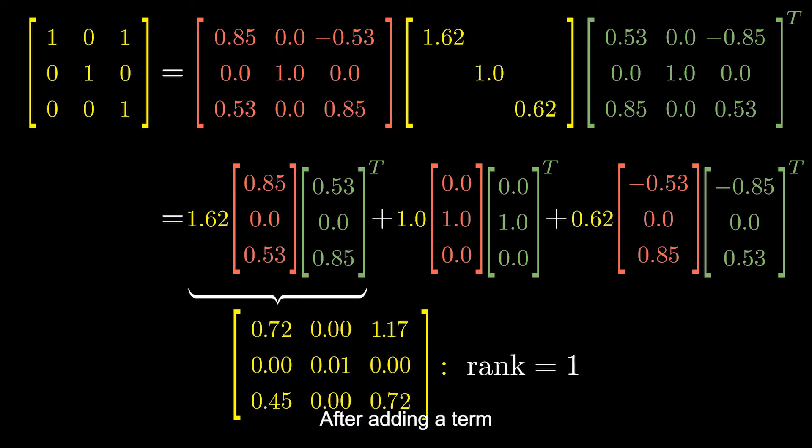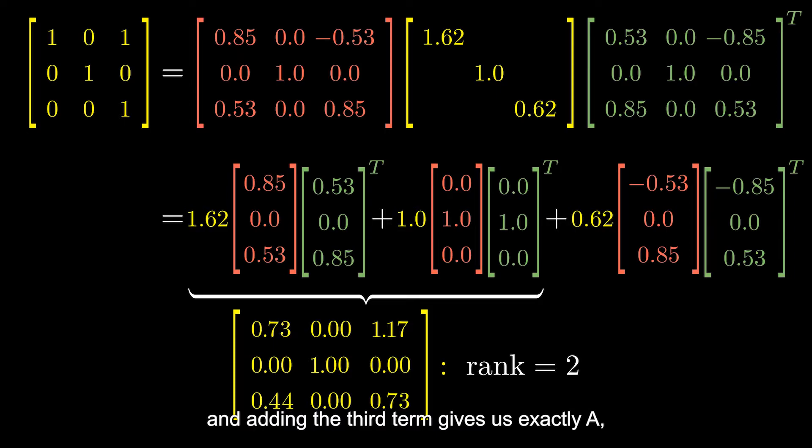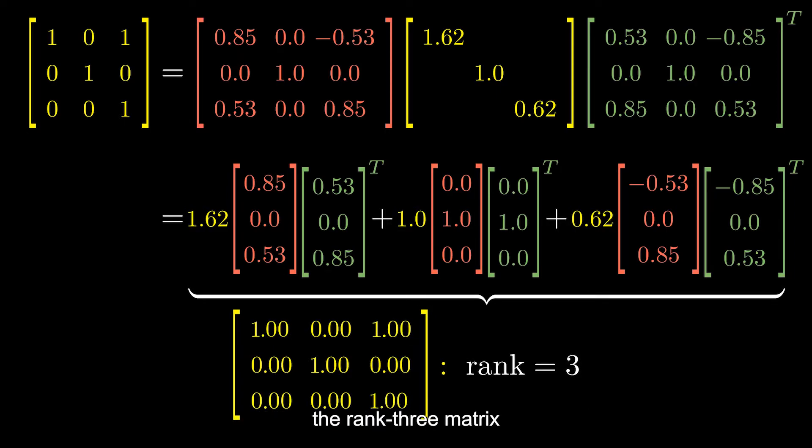After adding a term, the result has rank-2 and becomes closer to A. And adding the third term gives us exactly A, the rank-3 matrix.